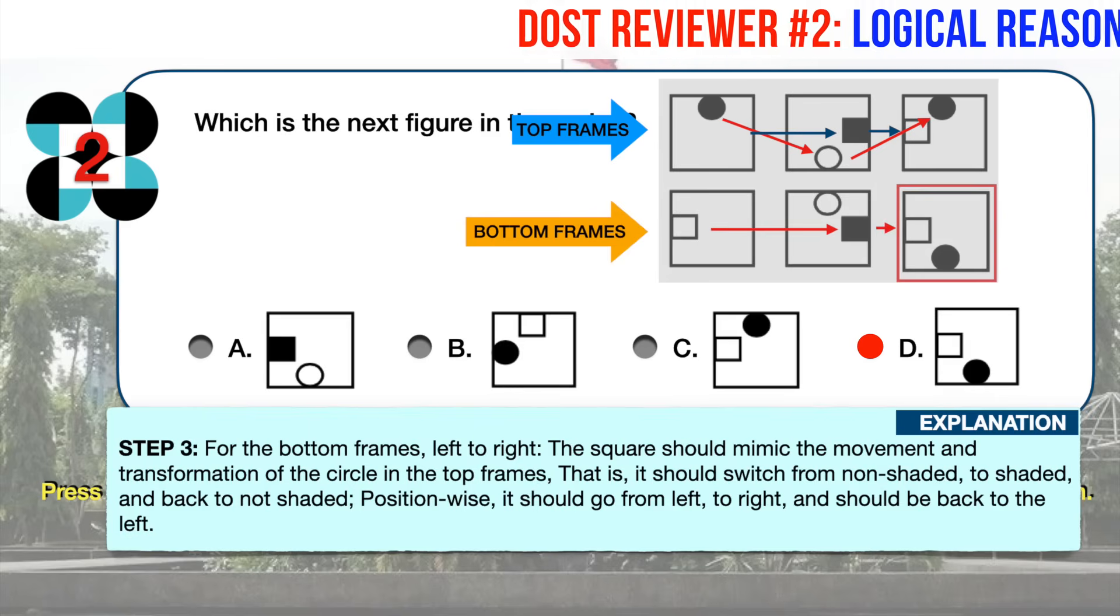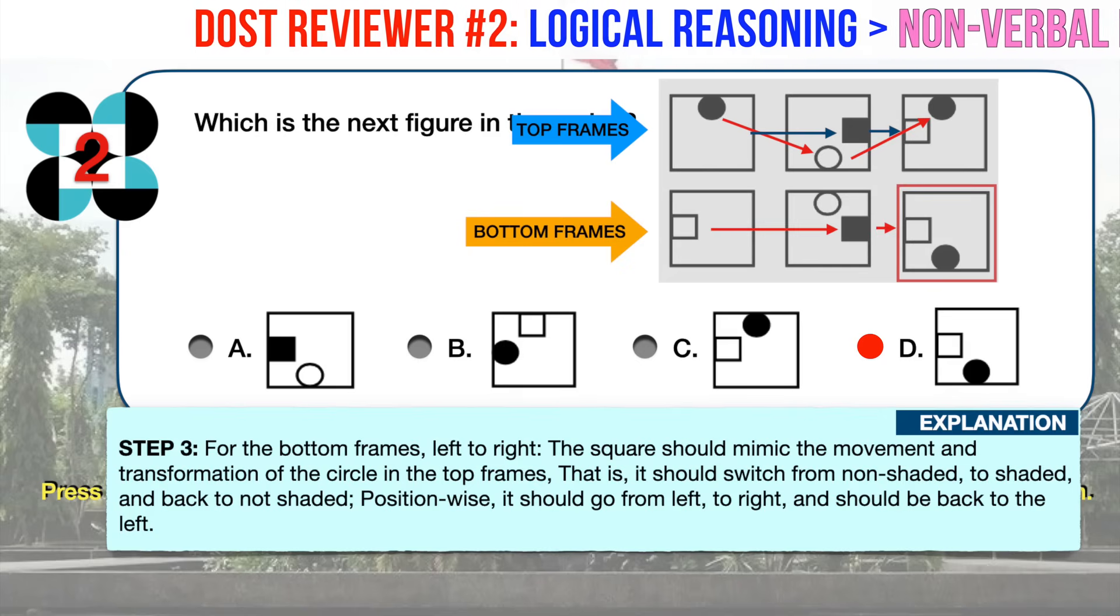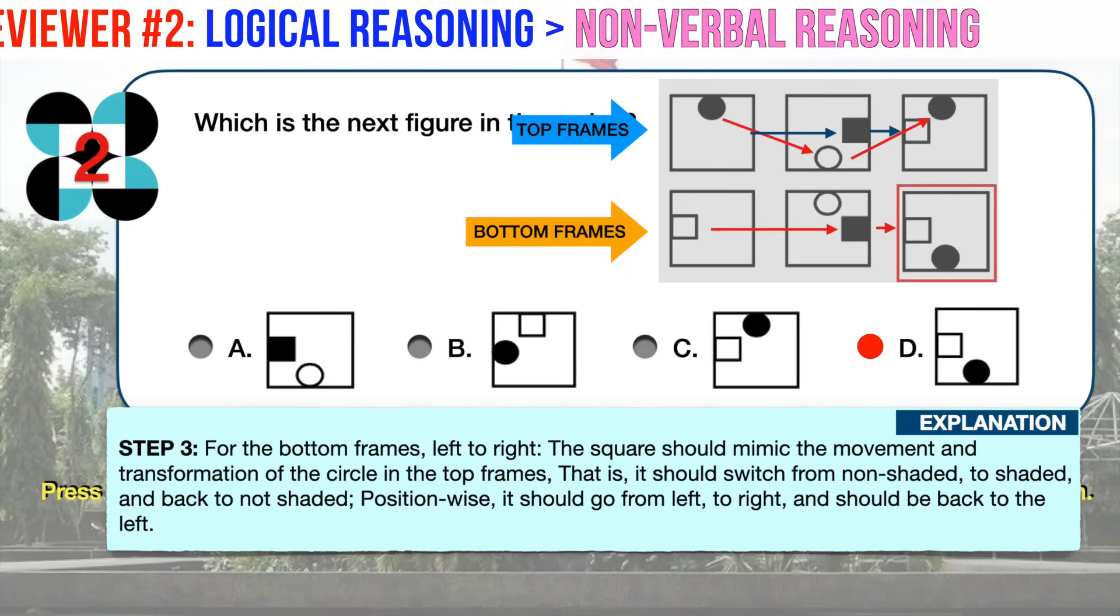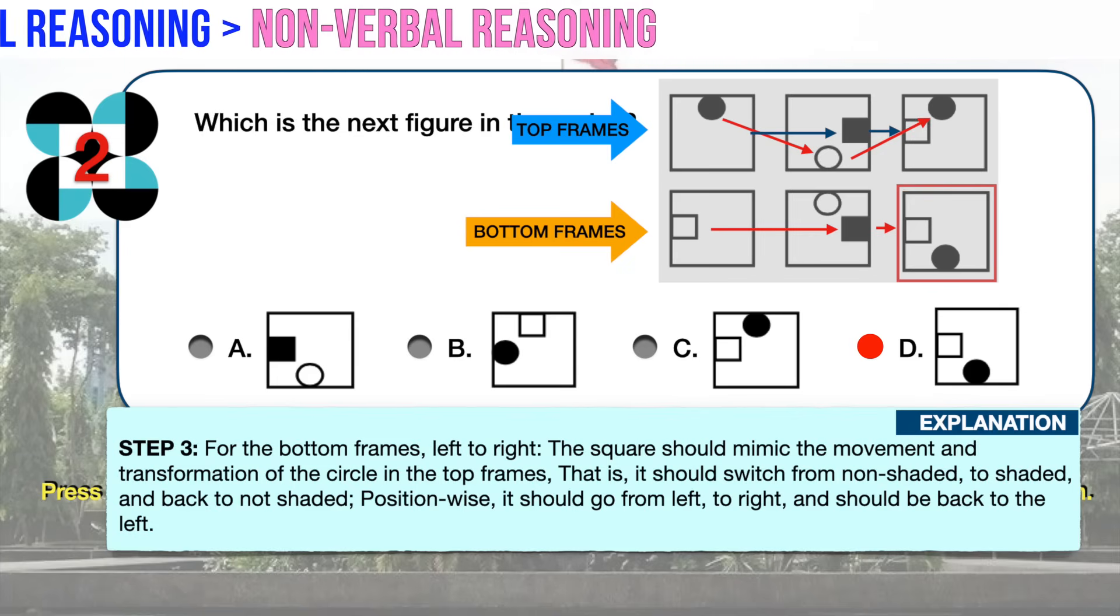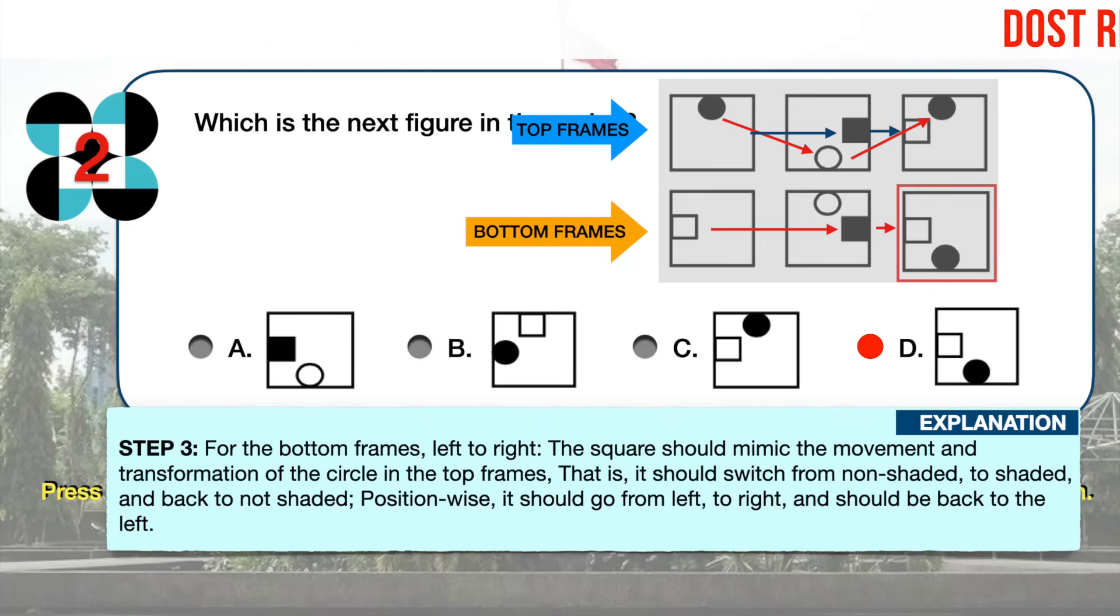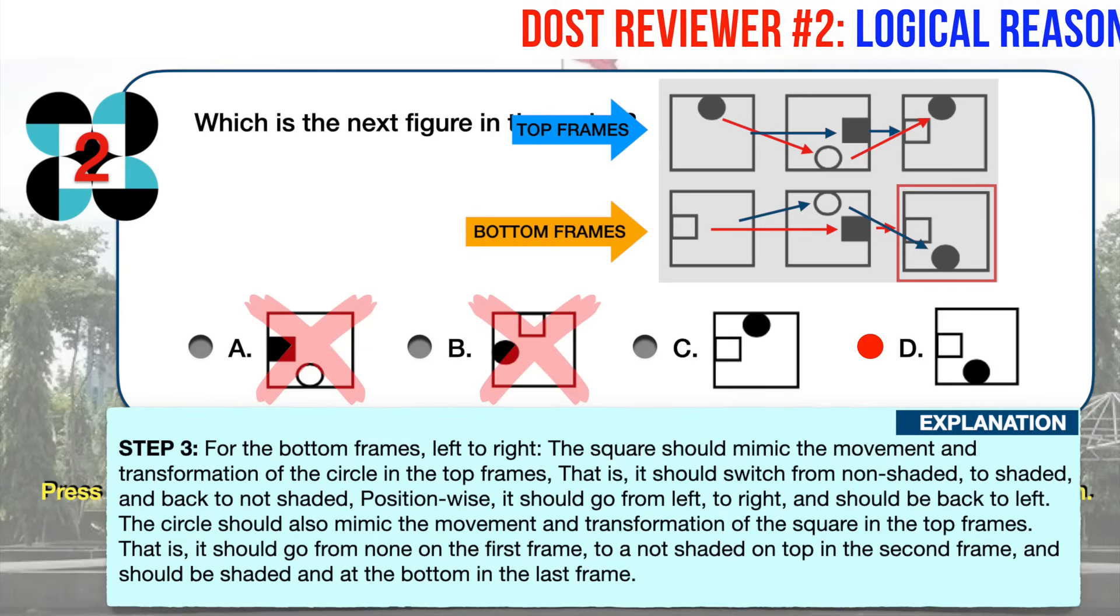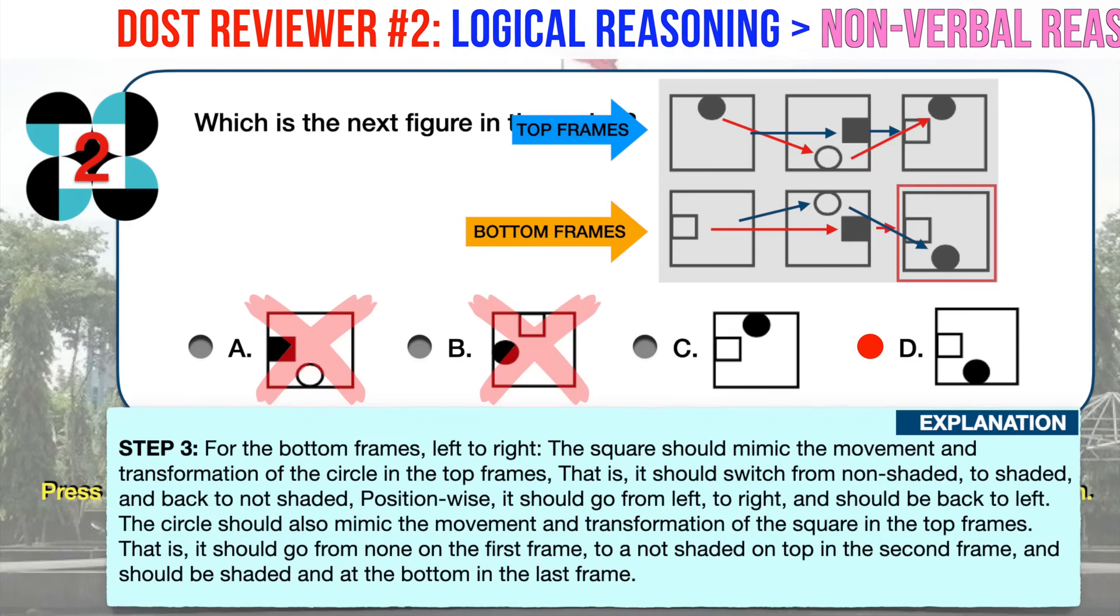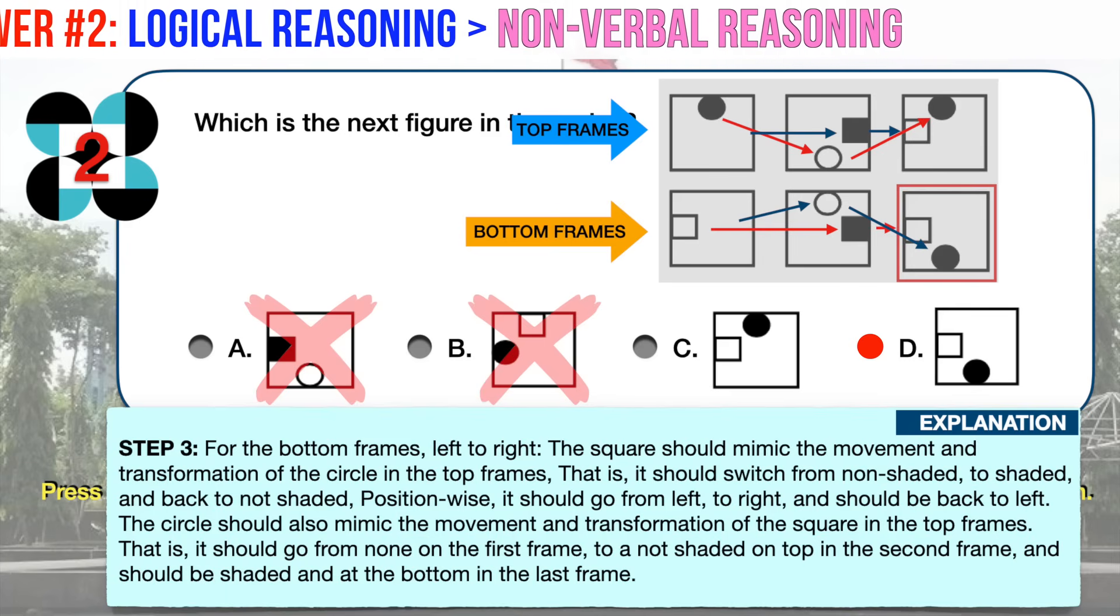For the bottom frames, left to right, the square should mimic the movement and transformation of the circle. Position-wise, it should go from left to right and should be back to the left. This effectively eliminates A and B. The circle should also mimic the movement and transformation of the square in the top frames. That is, it should go from none on the first frame to not shaded on top in the second frame and should be shaded at the bottom in the last frame.